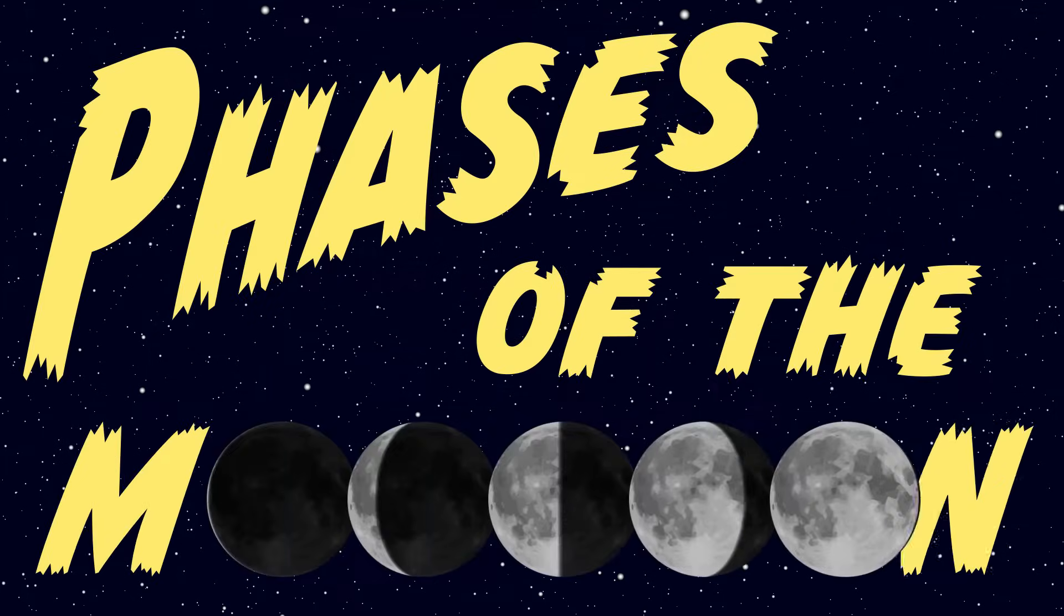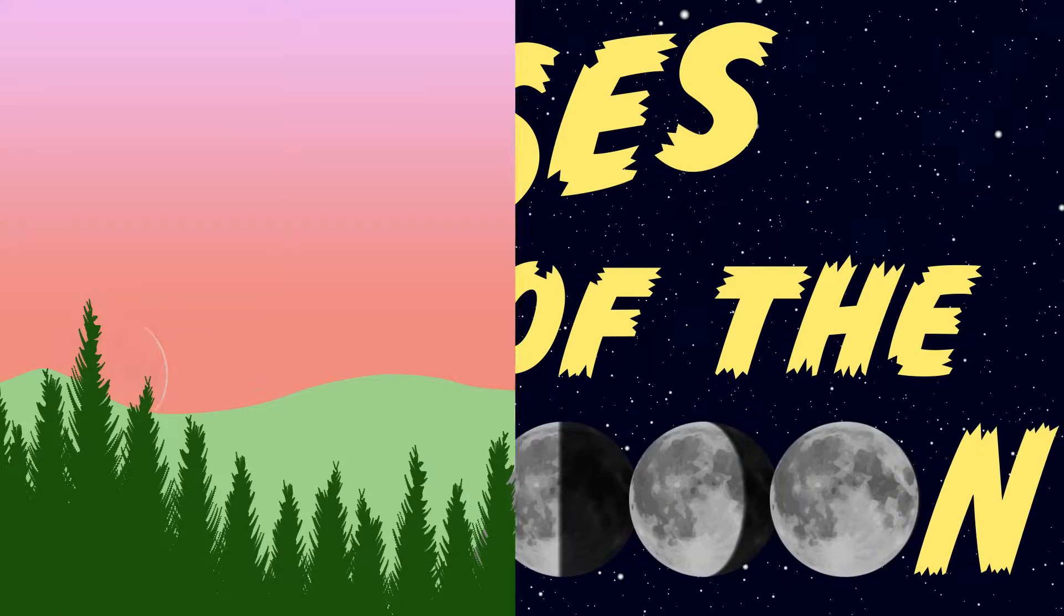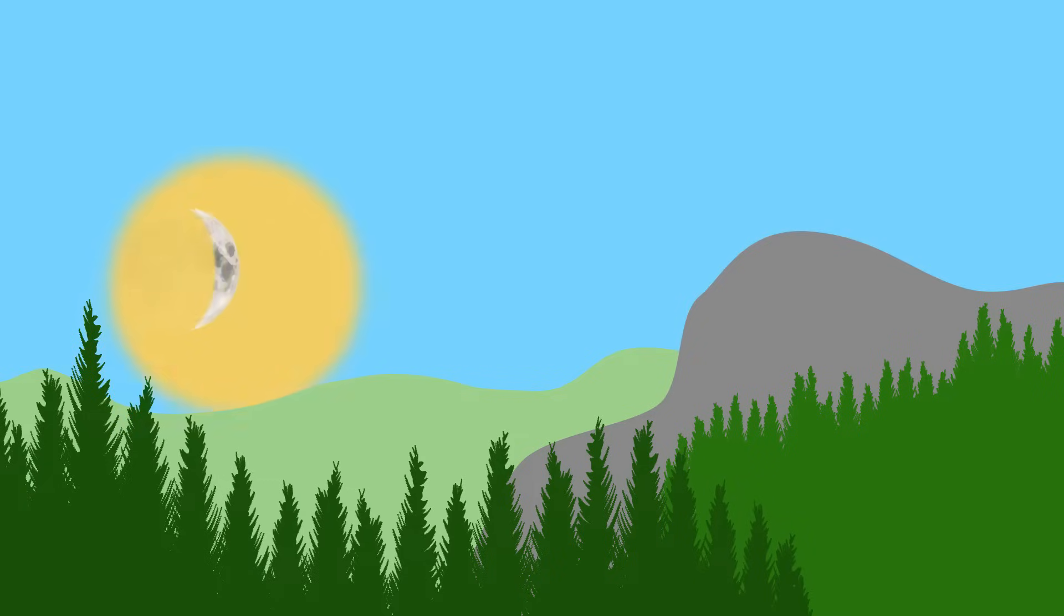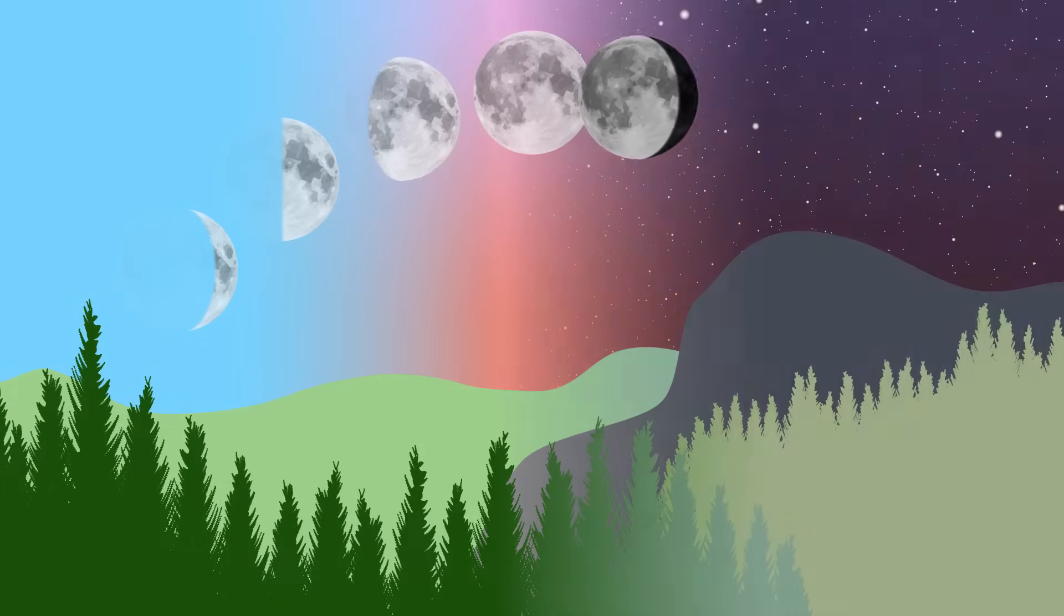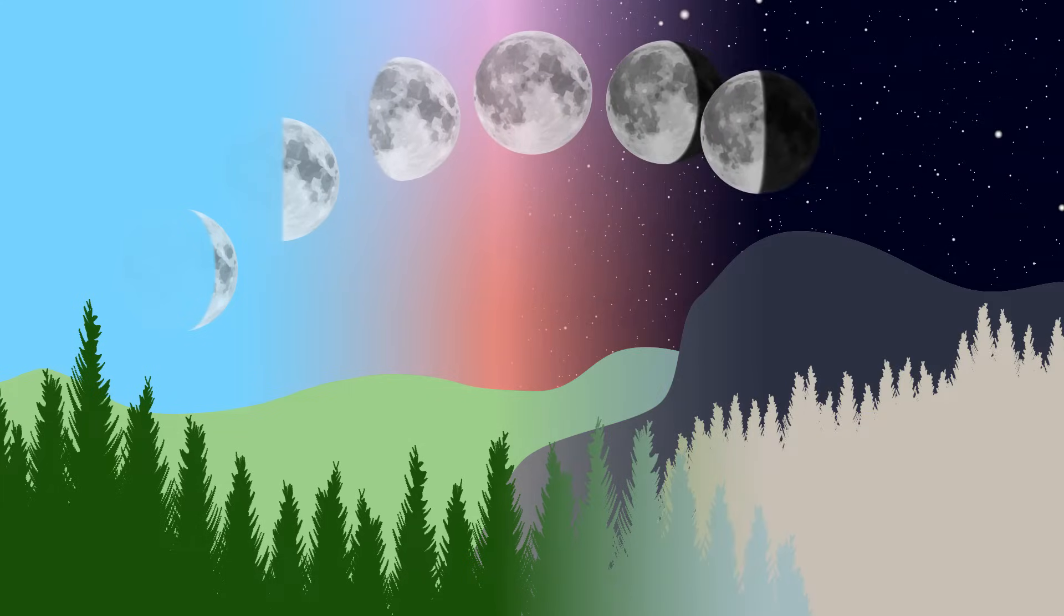Phases of the moon. For tens of thousands of years, people have been looking up at the moon and wondering why does it look different every night? And why do these different shapes, which we call phases, repeat themselves on a regular basis every month or so?